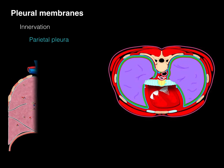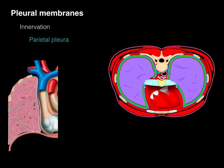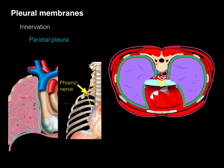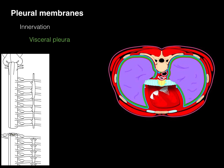The mediastinal and diaphragmatic parietal pleura also receive somatic innervation, but via the phrenic nerve that arises from C3, C4, and C5 spinal cord levels. This provides somatic innervation of pain, temperature, and touch to the mediastinal and diaphragmatic parietal pleura.